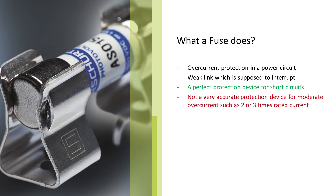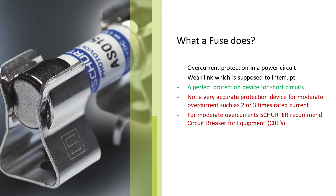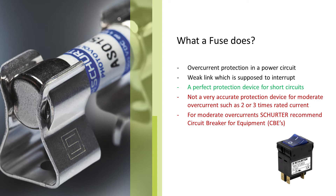However, it is not a very accurate protection device for moderate overcurrents such as 2 or 3 times rated current, which we would typically experience with a power overload of an electrical motor. For such moderate overcurrents, Schurter recommends using a circuit breaker for equipment, also known as CBE.